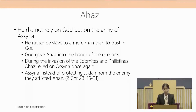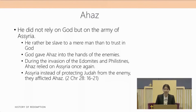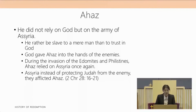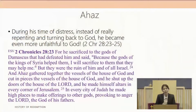God gave Ahaz into the hands of the enemy. Then another invasion came — the Edomites and the Philistines. Ahaz again relied on Assyria, but Assyria afflicted Ahaz instead of protecting Judah. All these attacks were allowed by God because he wanted to humble Judah. God will certainly humble, discipline, and judge those who are disobedient to his word. During his time of distress, instead of repenting and turning back to God, Ahaz became even more unfaithful. 2 Chronicles 28 verses 23 to 25 tells us he sacrificed to the gods of Damascus, saying the gods of the kings of Syria helped them, so I will sacrifice to them. But they were the ruin of him and all Israel.